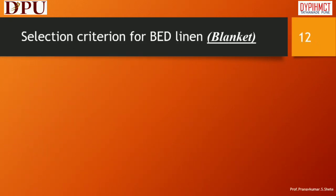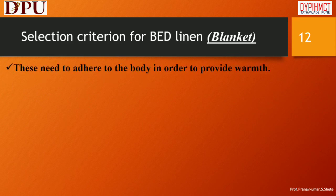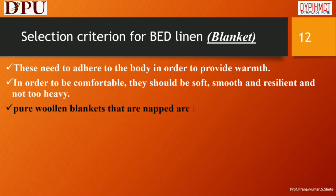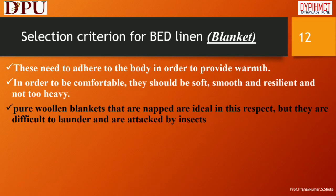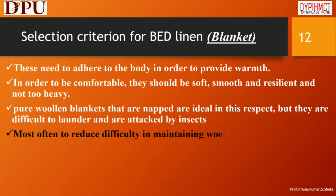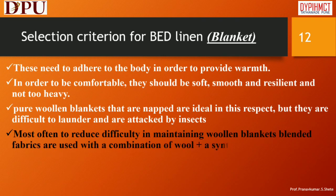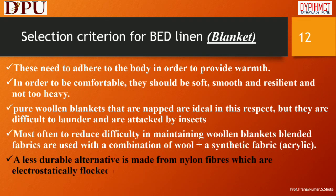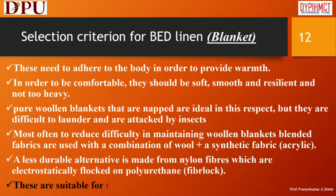Selection criterion for bed linen — Blanket: These need to adhere to the body in order to provide warmth. In order to be comfortable, they should be soft, smooth, and resilient and not too heavy. Pure woolen blankets that are napped are ideal in this respect, but they are difficult to launder and are attacked by insects. Most often, to reduce difficulty in maintaining woolen blankets, blended fabrics are used with a combination of wool plus a synthetic fabric. A less durable alternative is made from nylon fibers which are electrostatically flocked on polyurethane. These are suitable for those who are allergic to wool.